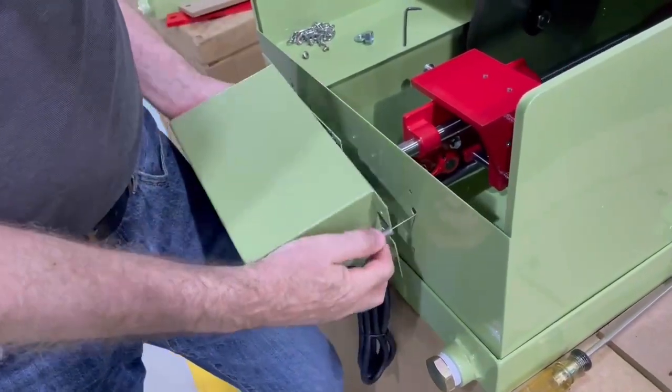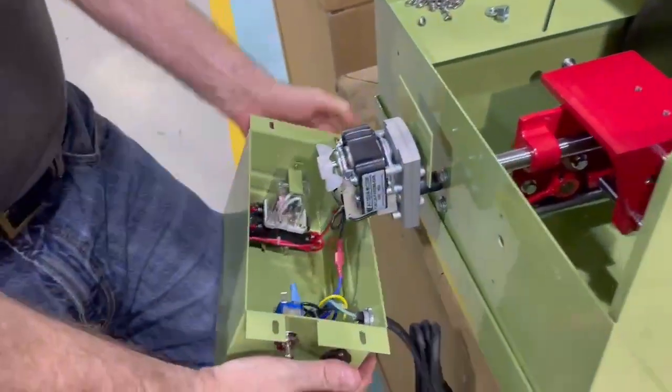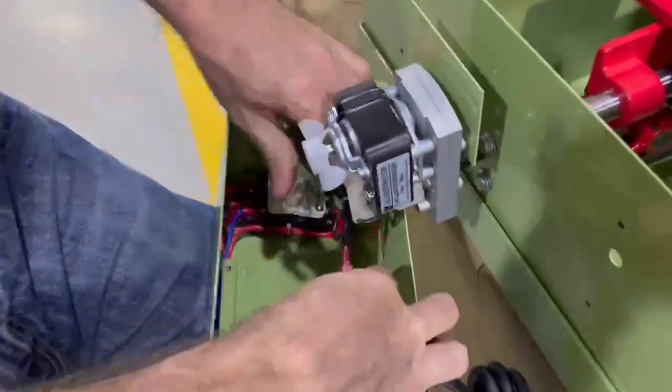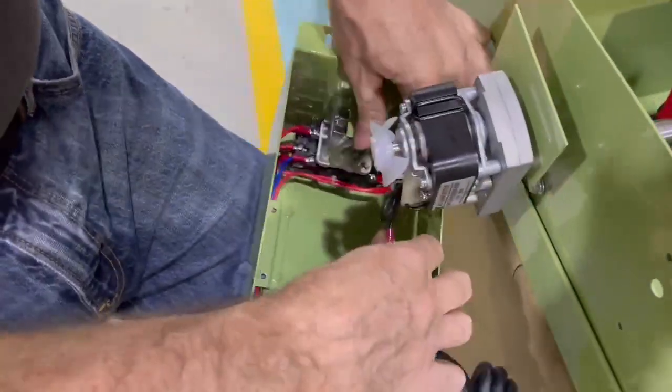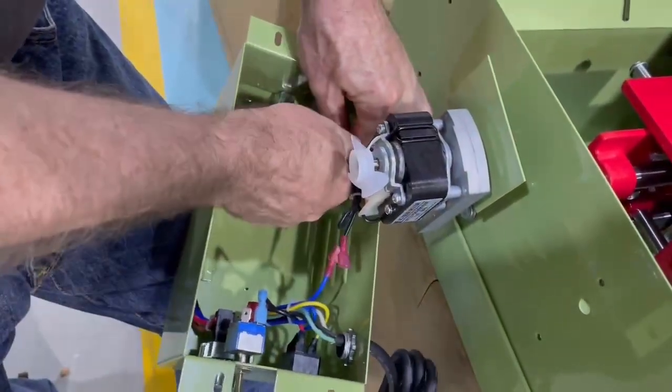When I undo this, you'll see there's two wires with connectors here. You don't want to pull on the wire—you want to pull on the connector. This allows you to unplug the motor.